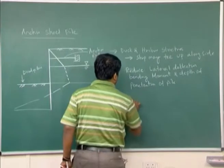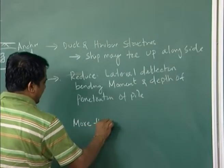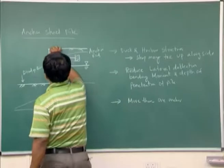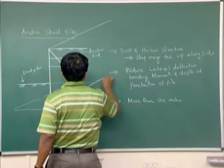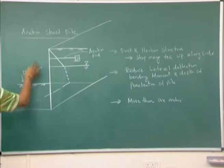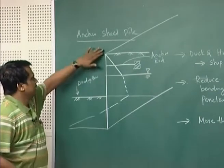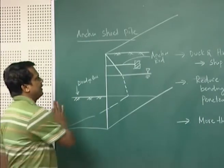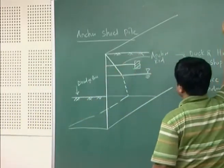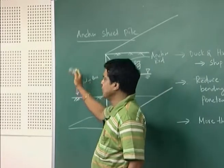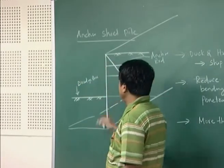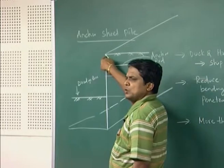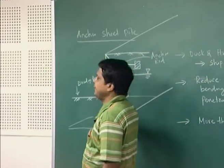More than one anchor may be provided. Taking a section, this is one side of the wall — this is the sheet pile wall going in this direction, and this side is the water side. It has to be embedded below the dredge line, and once it ties up here, it will pull the pile wall.